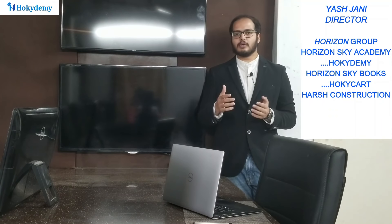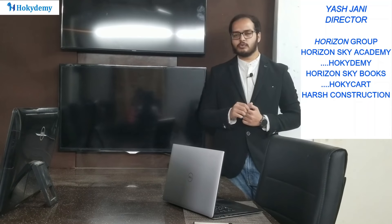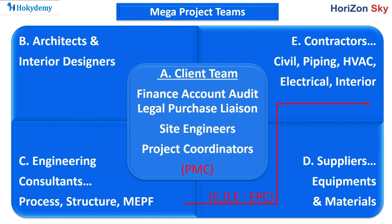For a medium or small scale project, the standard structure is mainly divided into five categories: first, the client team or PMC team; second, the architect and interior designers team; third, the engineering design consultant team; fourth, the contractor team; and lastly, the supplier or vendor team.